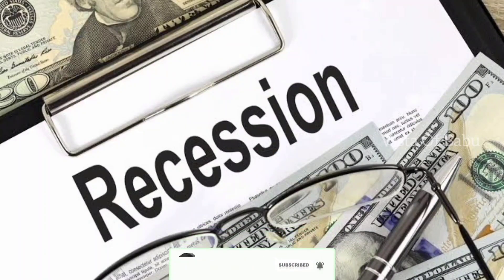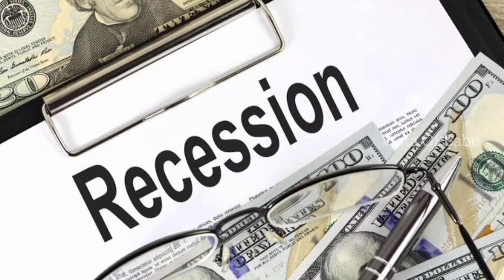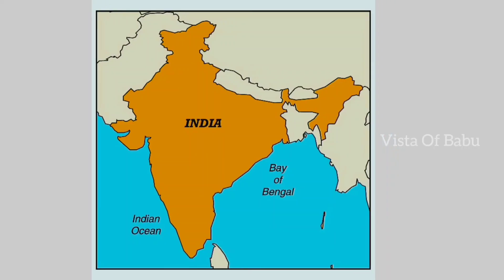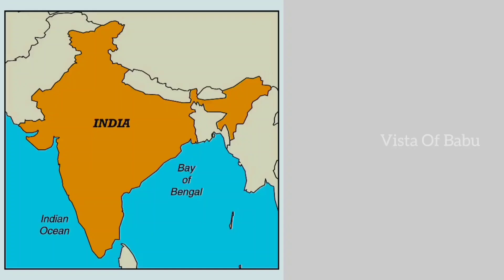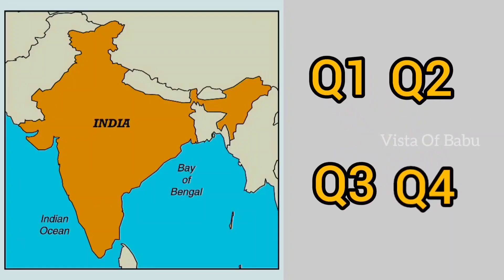If GDP is negative, that means it is a recession. We calculate GDP for each country by term. For example, in India, from 1st April to 31st March, it is divided into Q1, Q2, Q3, and Q4.